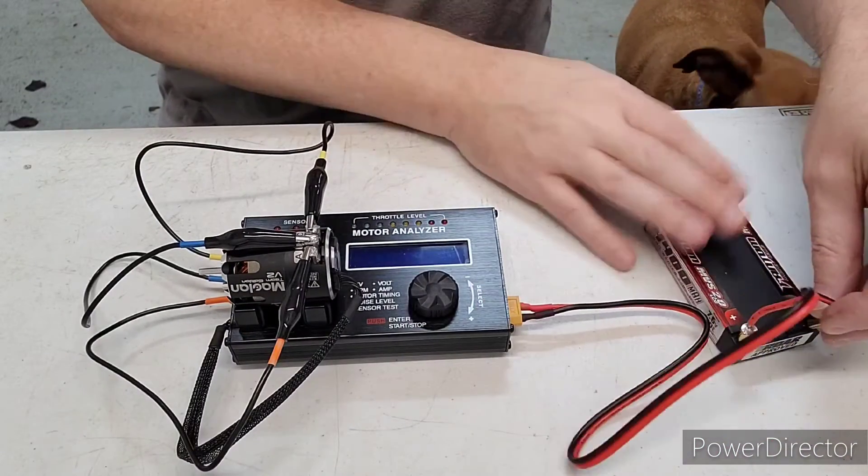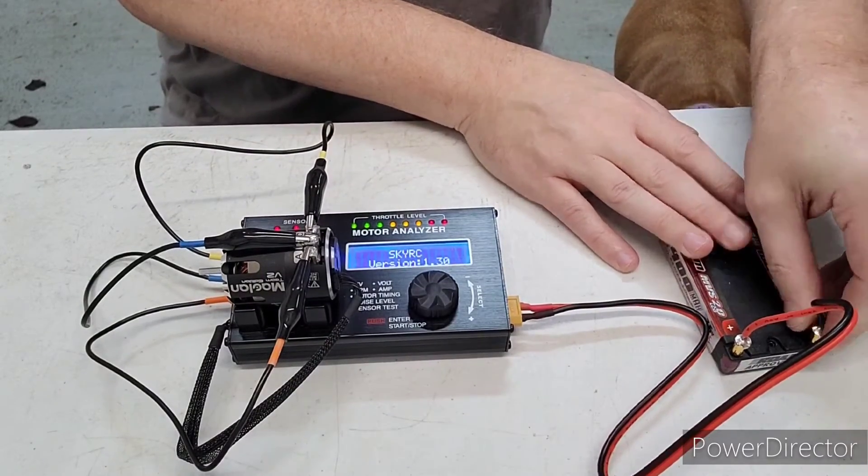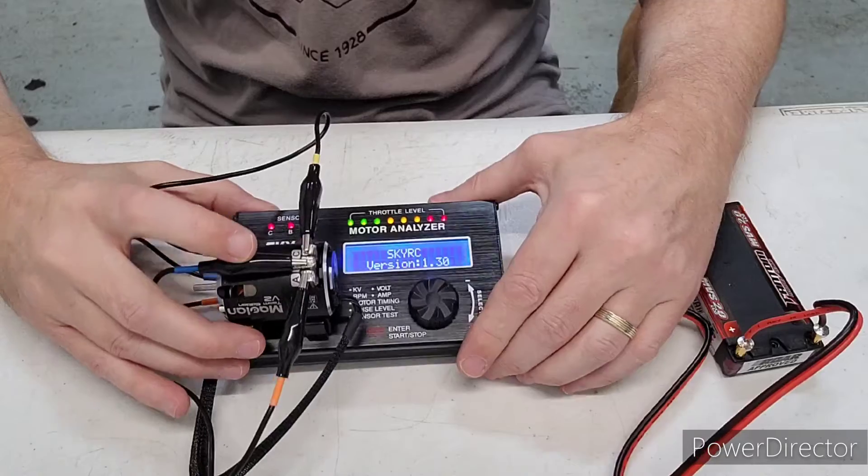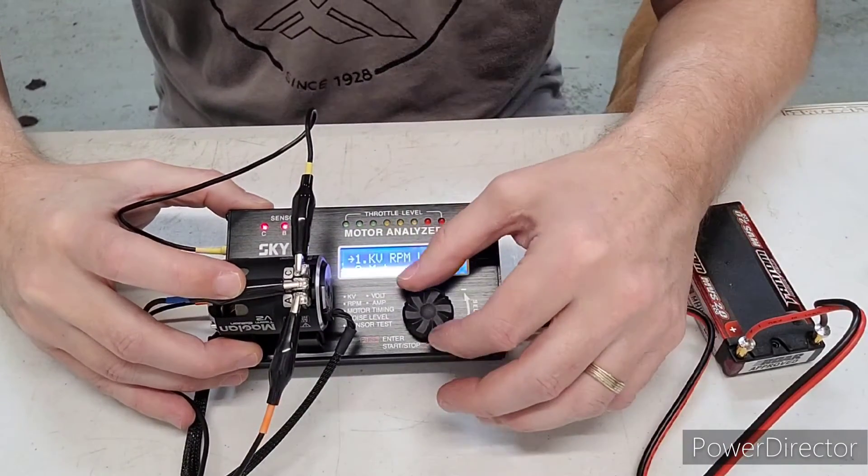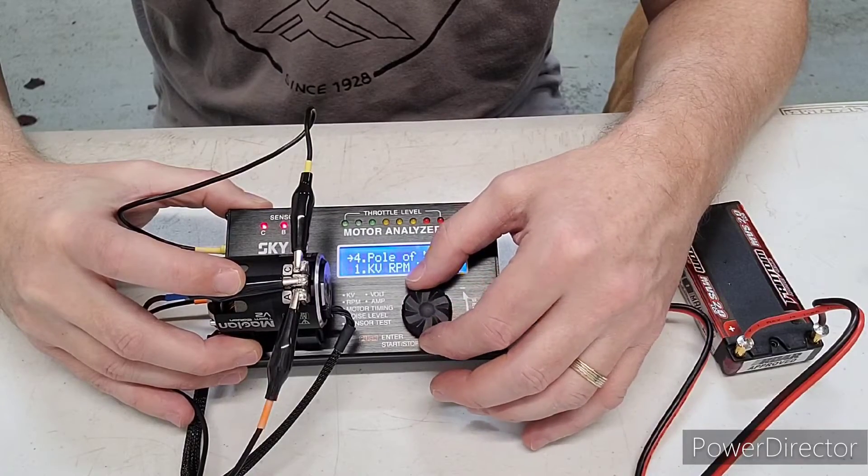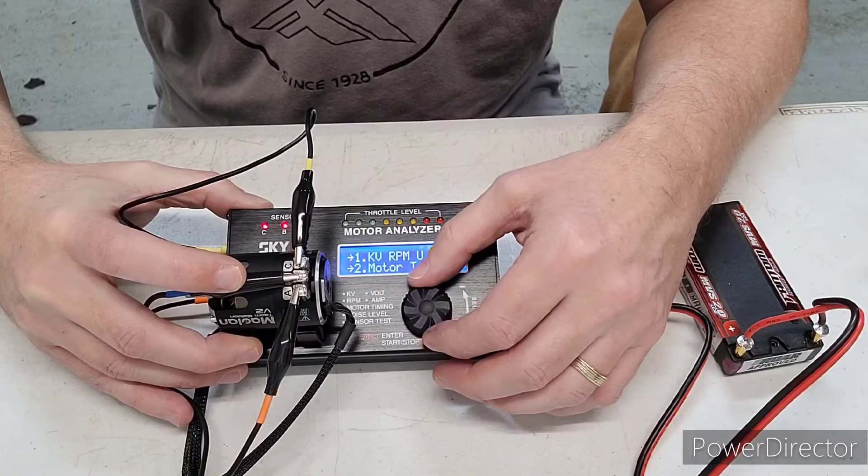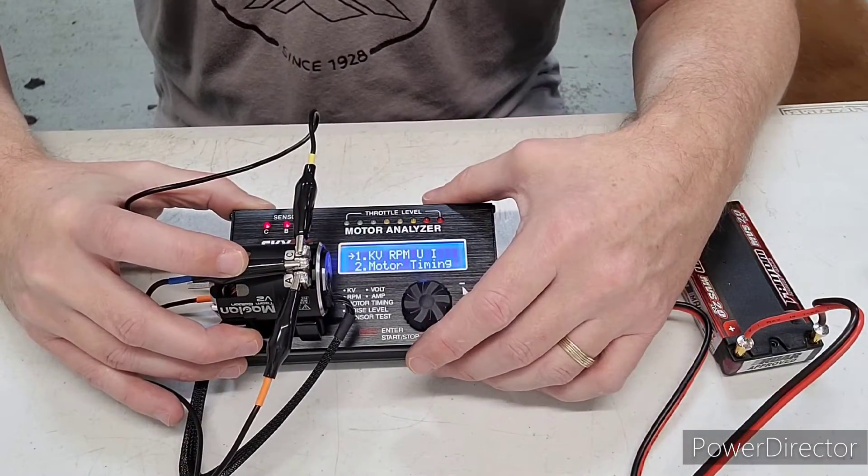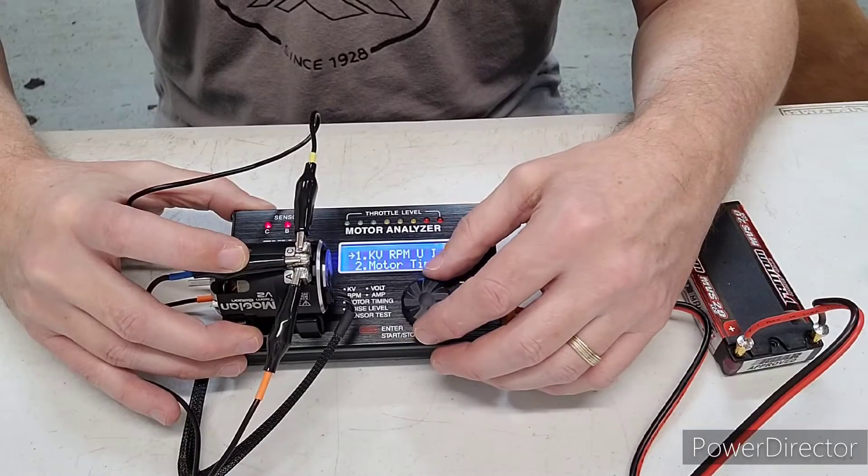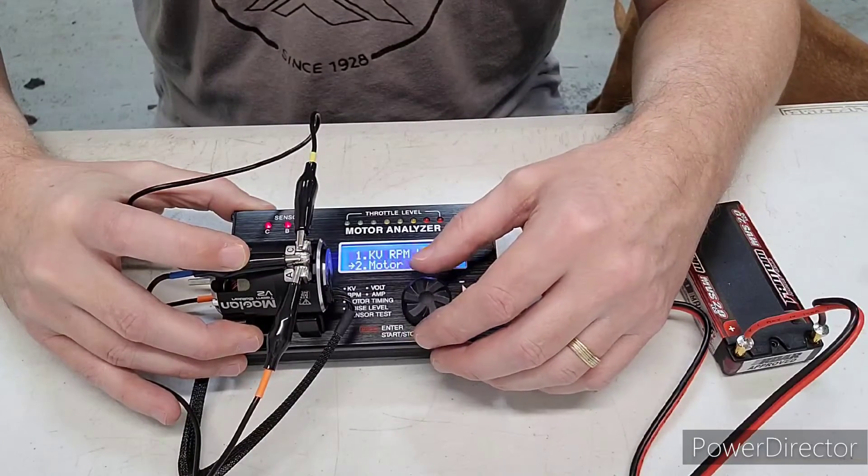All right. So we got the battery here and we'll plug that in and you'll see now that this thing, it powers up and it comes to a menu here and you can move between the numbers and the number one is the one you use to generate the data to time this motor properly.